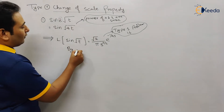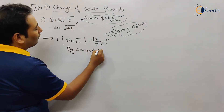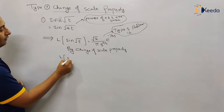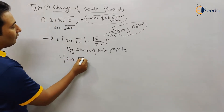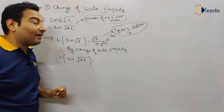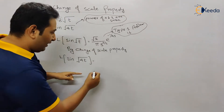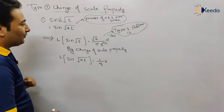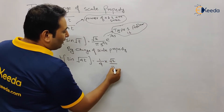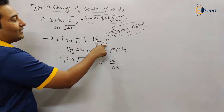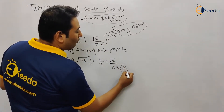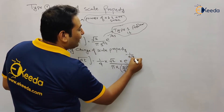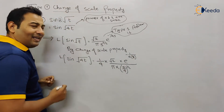Now applying the Change of Scale Property, the Laplace of sin√(4t) — with scaling factor 4 — means we multiply by 1/4 and replace s with s/4. So the expression becomes: (1/4) · √(2/π) · (s/4)^(−3/2) · e^(−1/(4·(s/4))). Here s is replaced by s/4 throughout.